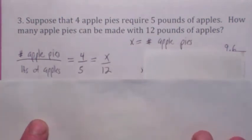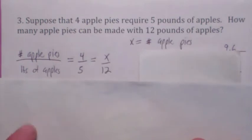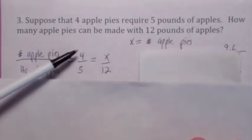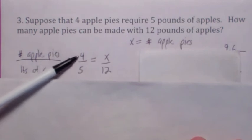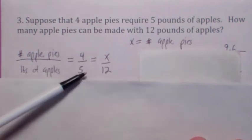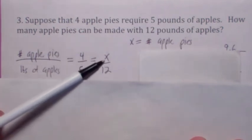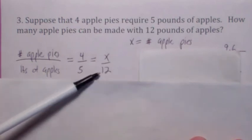Number of apple pies on the top, pounds of apples on the bottom. Again, we do that so the variable will be in the numerator. It just makes it easier to solve. So 4 apple pies requires 5 pounds of apples. How many apple pies can you make for 12 pounds of apples? That's what they're asking.